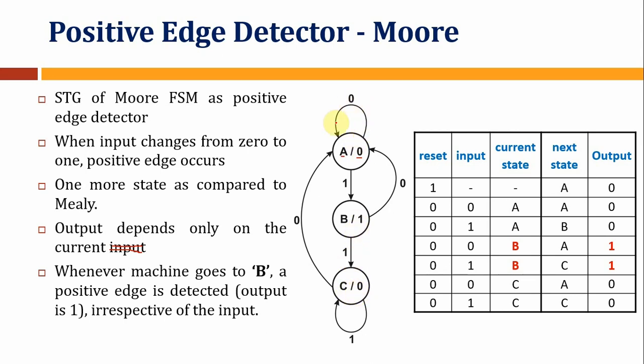When A is in state A, after a positive edge occurs, the state transitions to state B.